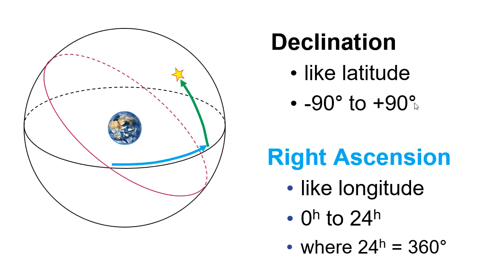So declination, measured in degrees. Right ascension, measured in hours.